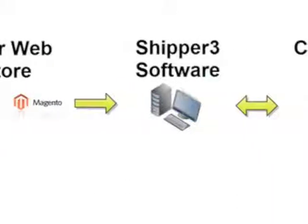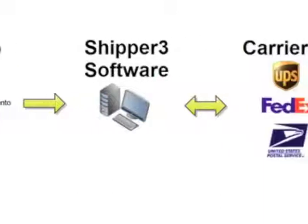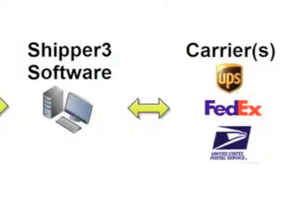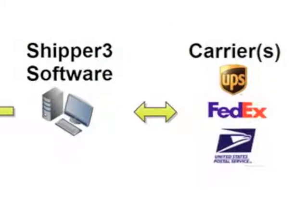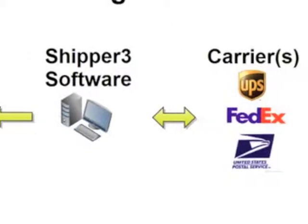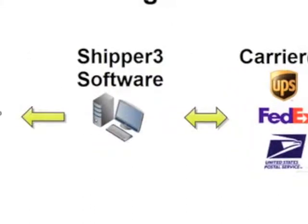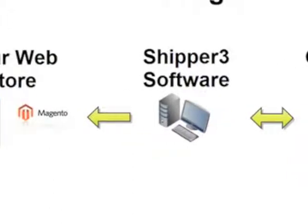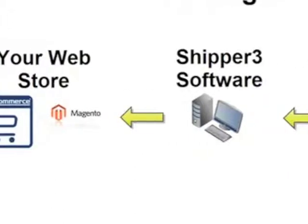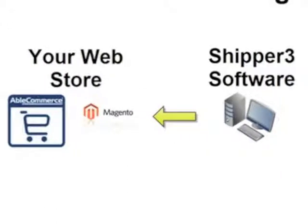Next, you can connect to your carrier and generate a shipment. Once that shipment has been generated, Shipper can print out a shipping label, a packing list, or other reports. Finally, you can click a button and update your web store with order tracking and shipping information.